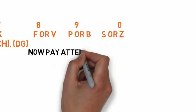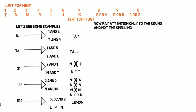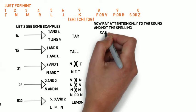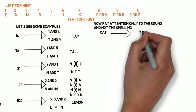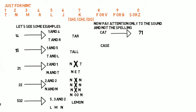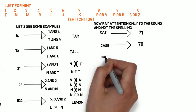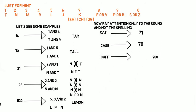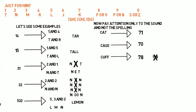Pay attention only to the sound or pronunciation of the word, not the spelling. For example, 'cat' — the sound is K, so it converts to 71. Similarly, 'case' sounds like K-A-S, so it converts to 70. 'Cuff' — C-U-double-F — converts to 78, not 788, because the sound of F appears only once. Remember: sound, not spelling.